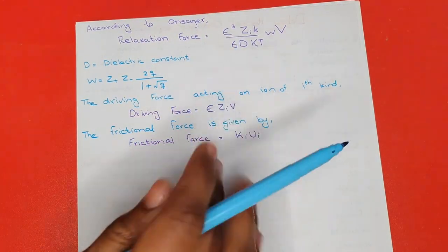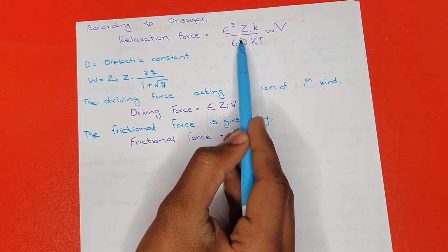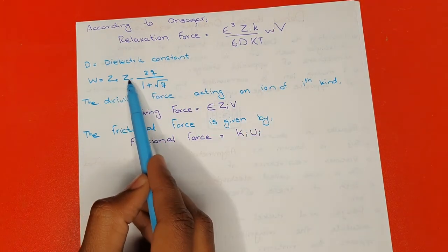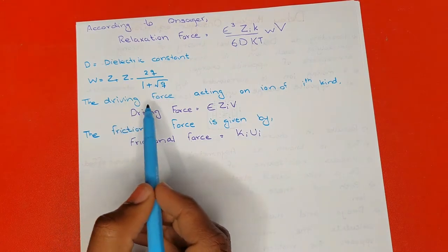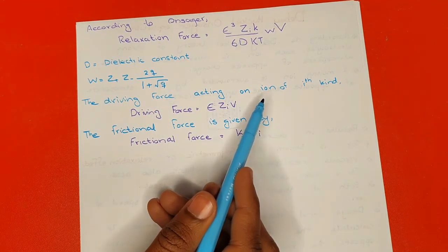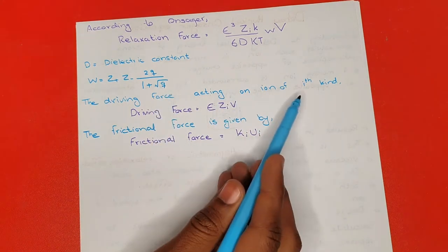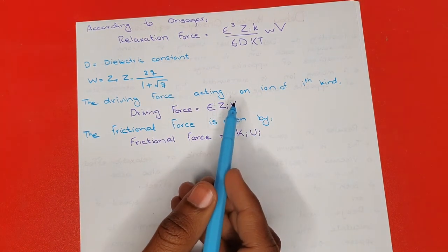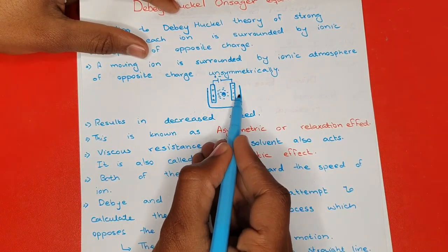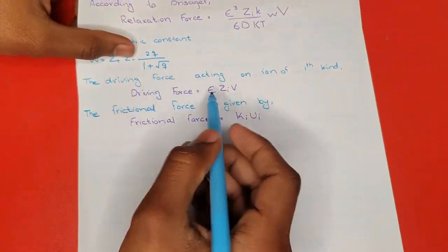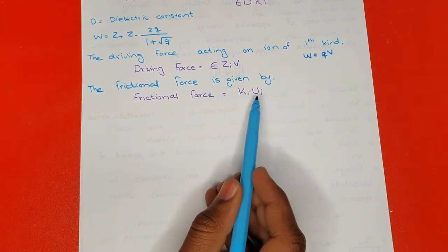According to Onsager, the relaxation force is given by: e³ · ε³ · z_i · k / (6D · kT · ω · v), where D is the dielectric constant and ω = (z₊z₋ · 2q) / (1 + √q). The driving force acting on the ion — driving it towards the electrode — is given by e · z_i · v.